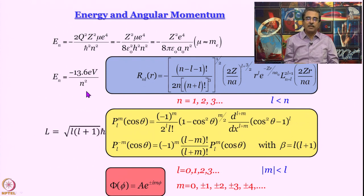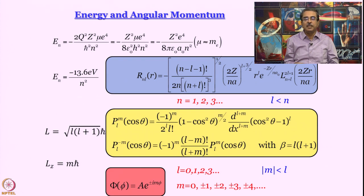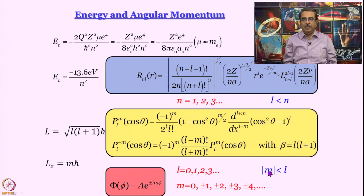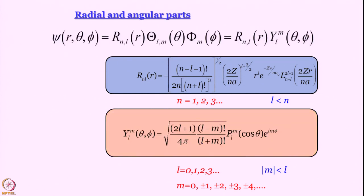From the angular part — the theta part — we get to know the total angular momentum, which is ℏ√(l(l+1)). From the phi-dependent part, we get the z component of angular momentum mℏ, and once again that is why |m| has to be less than or equal to l. What we often do is take the angular part together and write it as spherical harmonics, which is the theta part multiplied by the phi part.